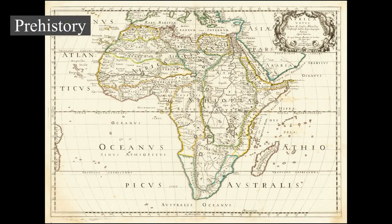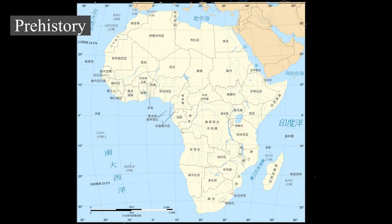History — Prehistory: Africa is considered by most paleoanthropologists to be the oldest inhabited territory on earth, with the human species originating from the continent. During the mid-20th century, anthropologists discovered many fossils and evidence of human occupation perhaps as early as seven million years ago BP (before present). Fossil remains of several species of early ape-like humans thought to have evolved into modern man were found.